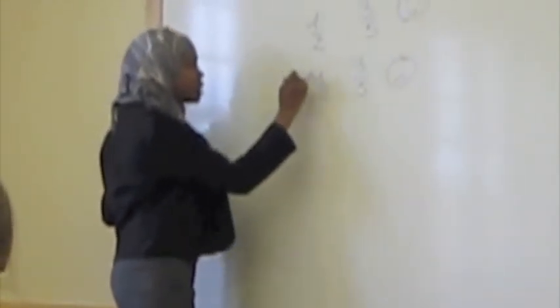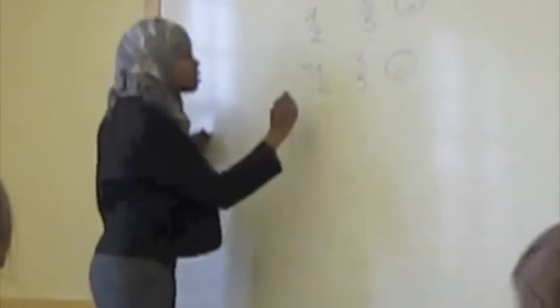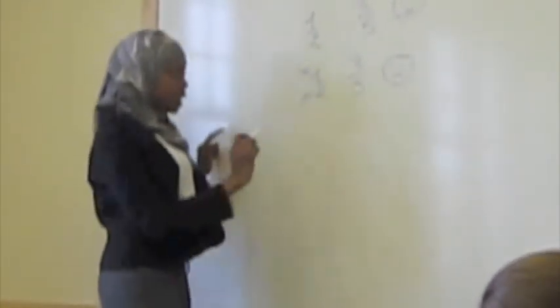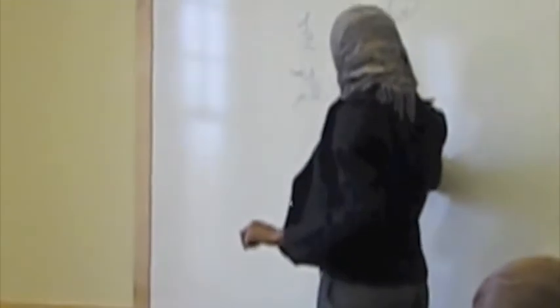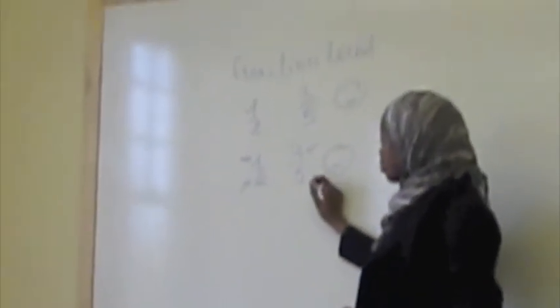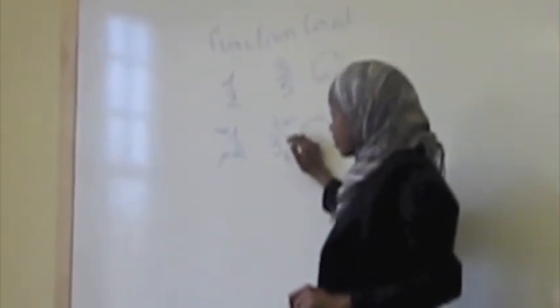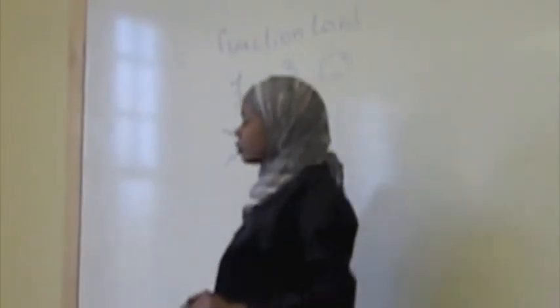So, one half's first name is the numerator and one half's last name is the denominator and three fifths' first name is the numerator and three fifths' last name is the denominator. So, the first name is the numerator, the last name is the denominator.